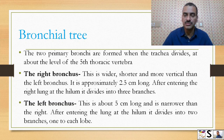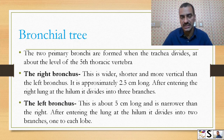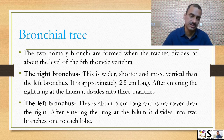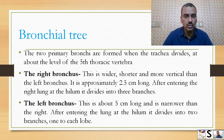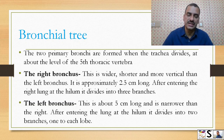After entering the right lung at the hilum, the right bronchus divides into three branches as secondary bronchi. The left bronchus is about 5 centimeters long and narrower than the right one, and after entering the lung at the hilum it divides into two branches, one for each lobe.